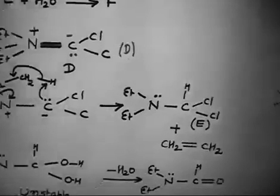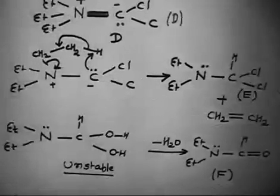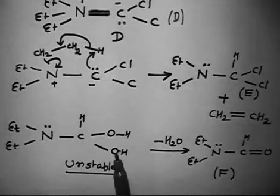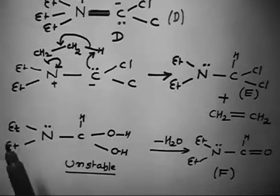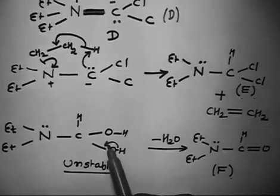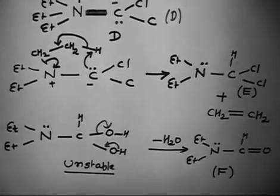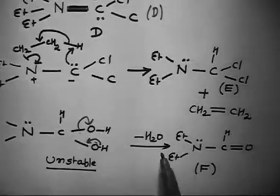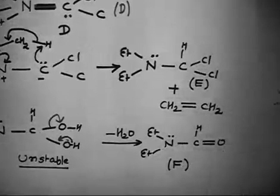Now everybody knows on the same carbon two OH groups are not stable, so this molecule is unstable. It can easily release one molecule of water, so you can easily release H2O. This lone pair and this double bond, I basically lose H2O and then it forms F, the desired product.